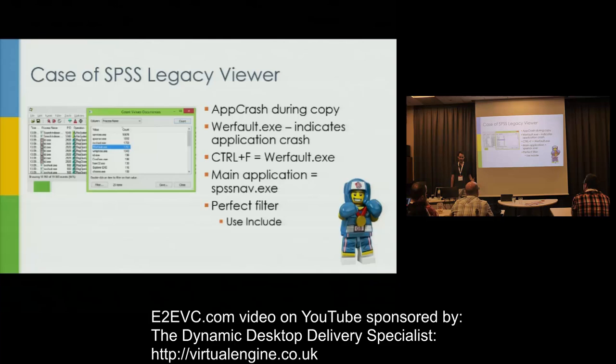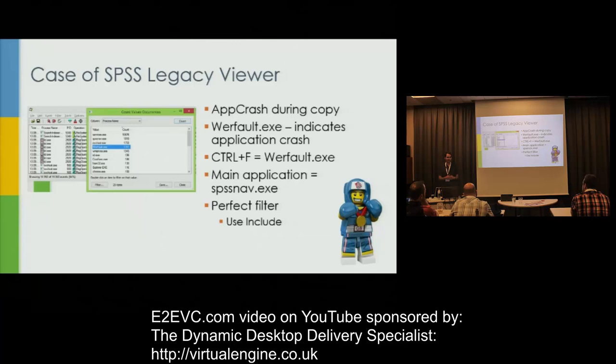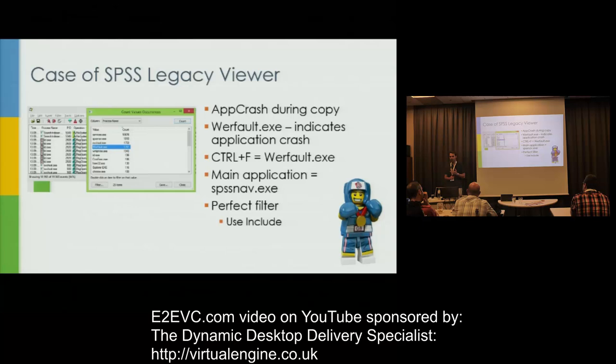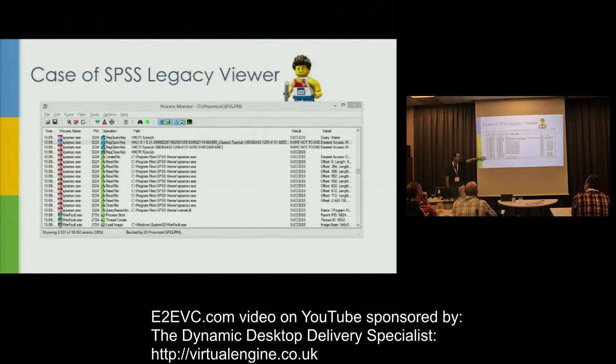Maybe that's the breaking point, because whatever happened before that might indicate it's not operating as it should. So I figured out the application. That's the process. Now I have a perfect filter: I have the page fault, I know the timing, and I know my main process. Now I have 3,551 events down from 20,000 — that's a pretty good narrowing down. I can see page fault, process start — I know this is where the crash started. Then I start looking: it tries to read a few things, success, success, and then suddenly you have 'name not found.'